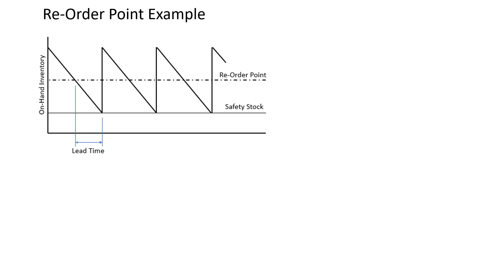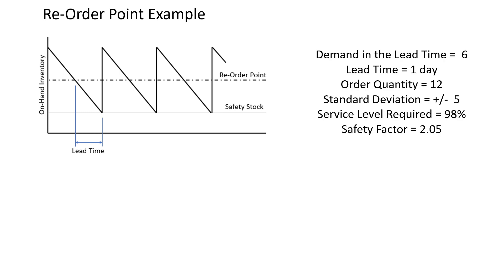Here is the traditional diagram for a reorder point system. Let us say this SKU is at a retail outlet, which can be replenished in one day from a distribution warehouse. The lead time for replenishment is one day, and with the average daily usage of 6, the demand in the lead time is therefore 6 units. When we order, we order enough for 2 days — in this case, 12.